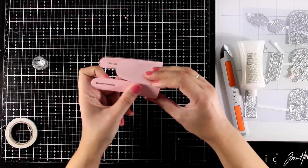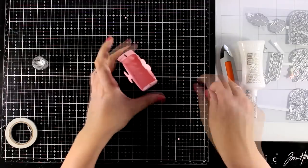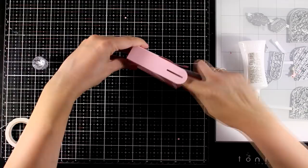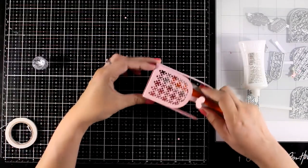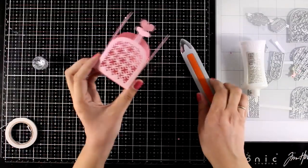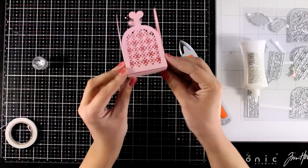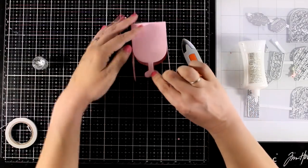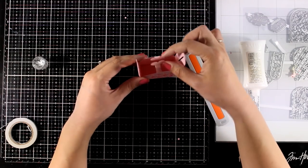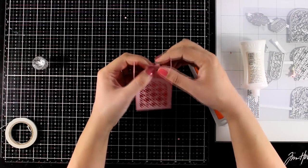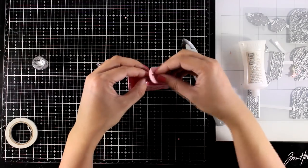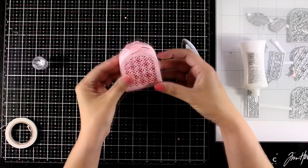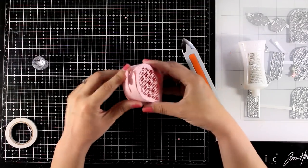I always like to run my bone folder one more time at the bottom where that glue is just to make sure that they are nicely stuck together and now I'm going to show you how easy it is to close this box. At the top you can see those two hearts, hold both of them together and press them down just a little bit and as you hold them together one after the other the flaps can slide on top. And here is the little box ready to go.